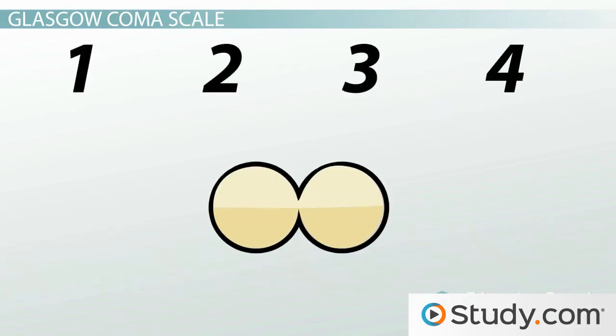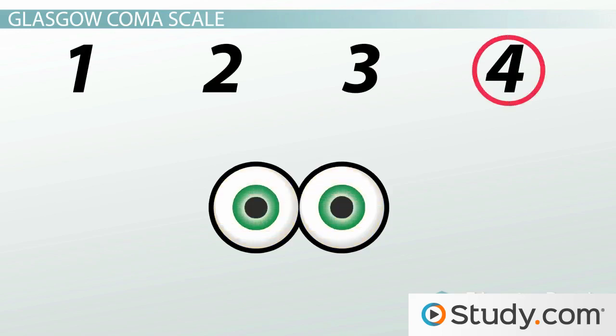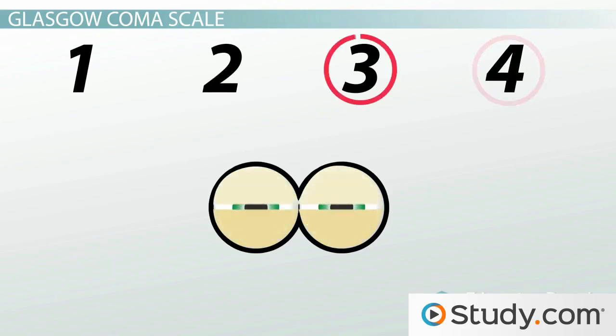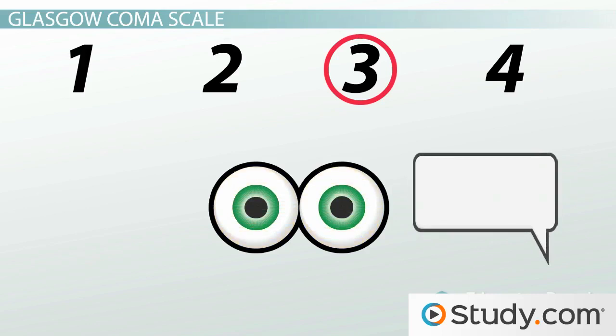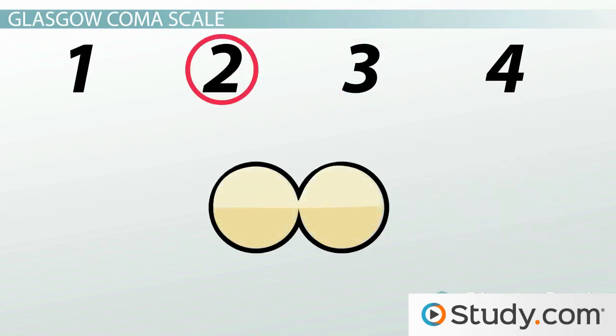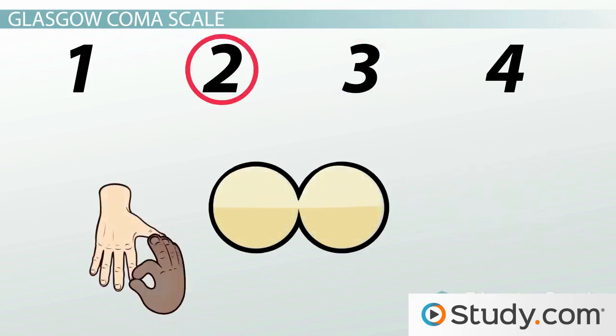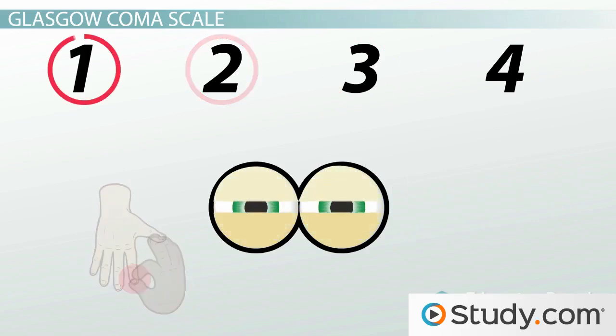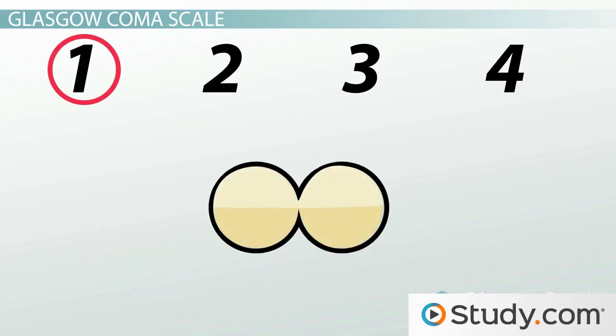For the eye opening response, there are 4 grades. A 4 is given to a patient that opens their eyes spontaneously, that is to say without external stimuli. A 3 is given to a person who only opens their eyes to a verbal cue. A 2 is if the eyes only open in response to a painful stimulus, and a 1 is if they do not open at all.